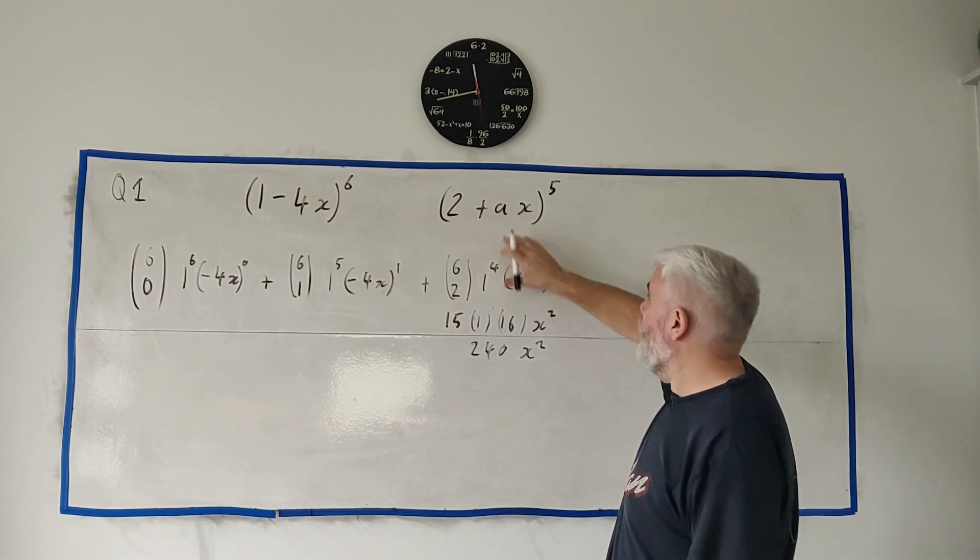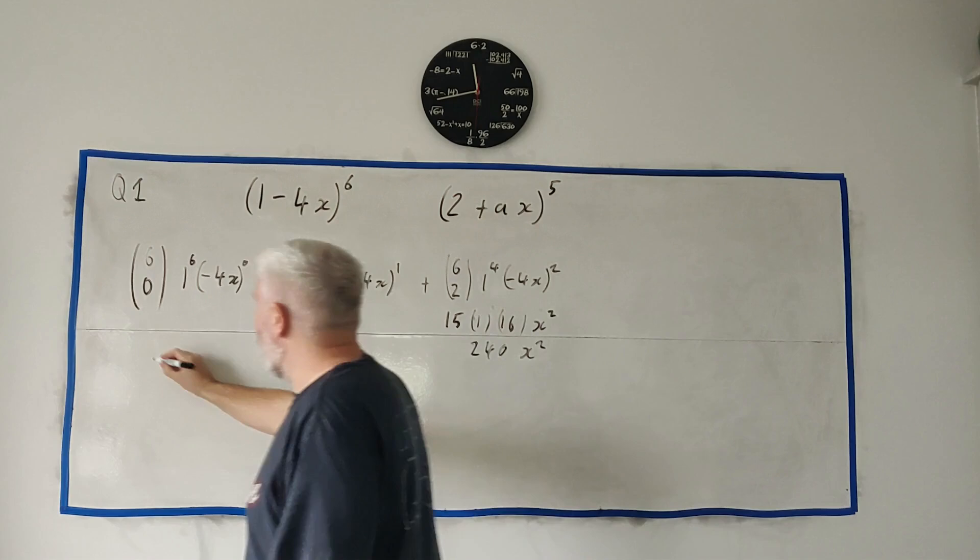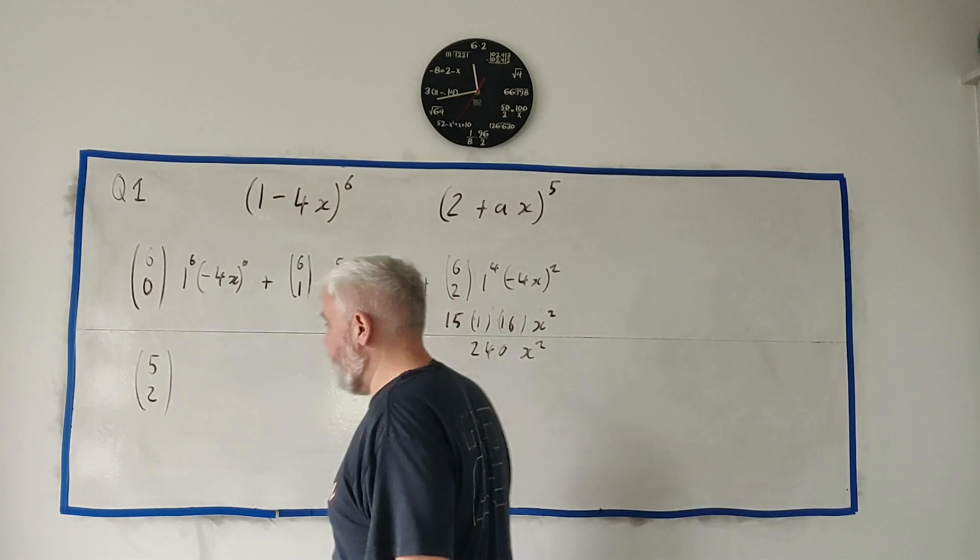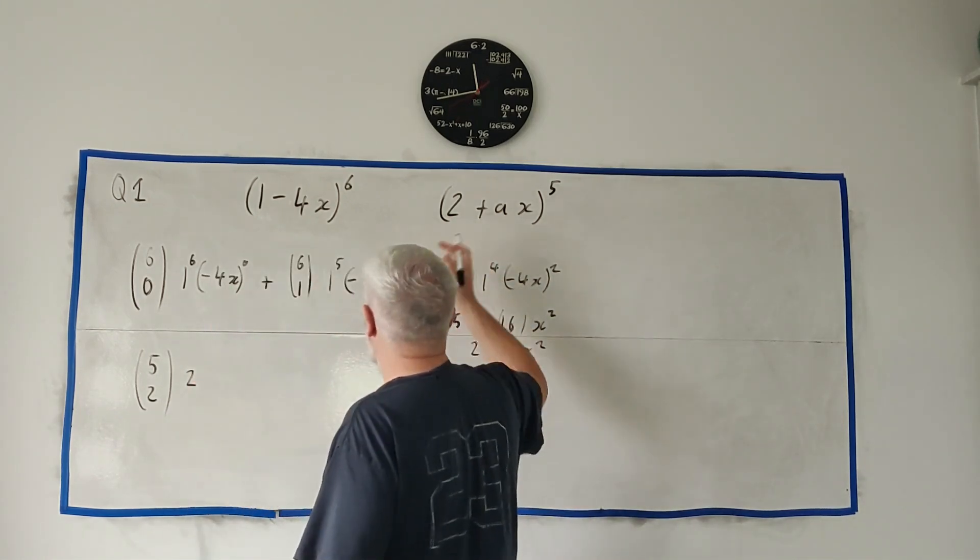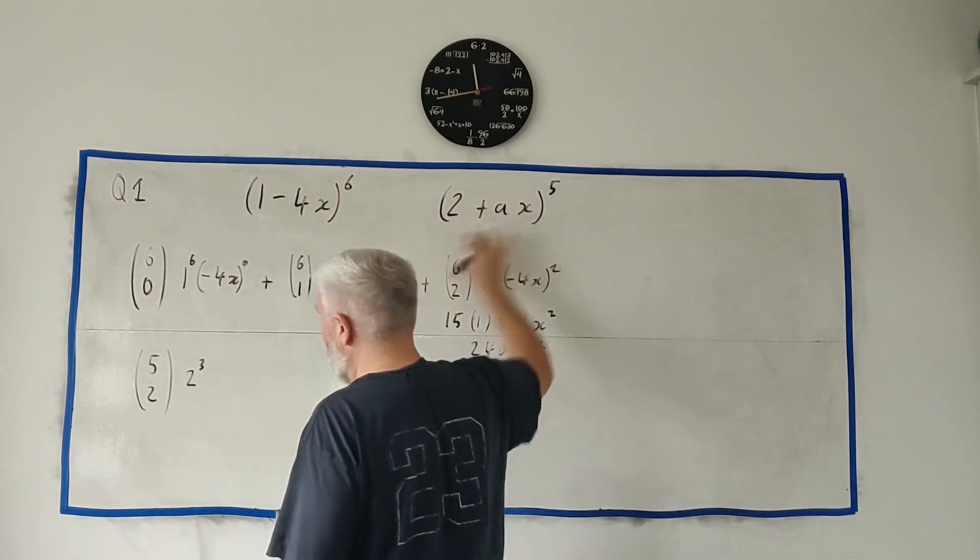And let's do the other one a little quicker, I won't do all the terms, I'll jump straight to this term. So the x squared term of this, let's put it over here, will be 5 from this 5, choose 2, because that's the term we're interested in, and this one, 2 to the power of 5 minus 2, or 3 in this case.